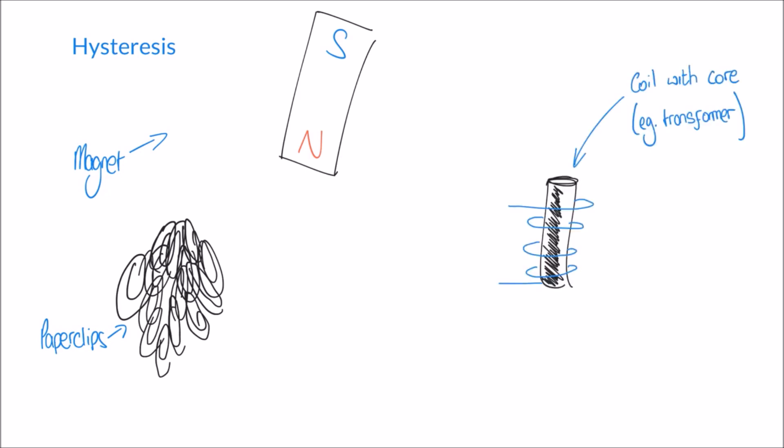One example where this might become significant in the field of electrical engineering is when we have a coil wrapped around an iron core. One of the other topics that we'll look at is the idea that we can use coils of wire to create magnetic fields, and often these coils will have an iron core, and as a result, just like the paper clips, the iron core will become magnetized.